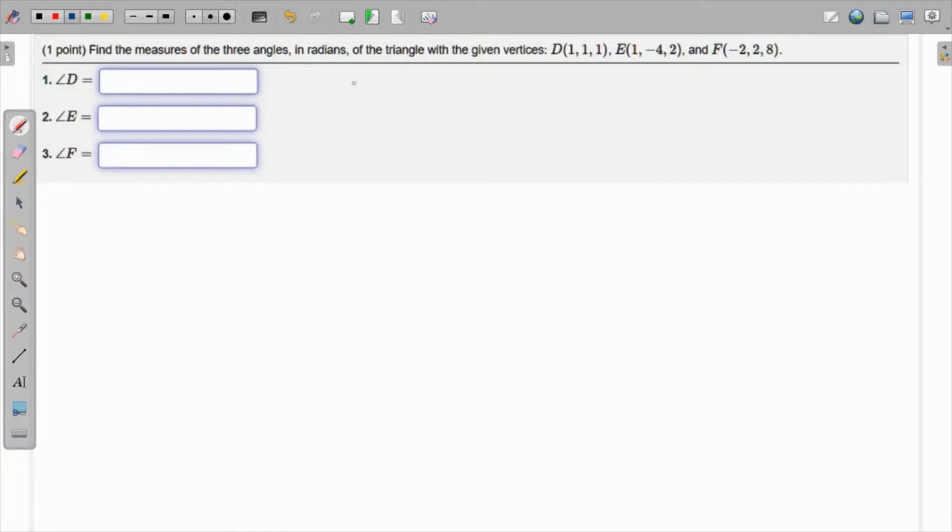We have to find the measures of three angles in radians of a triangle with the given vertices. It's a good idea if we can just make a rough sketch of the triangle showing the vertices.